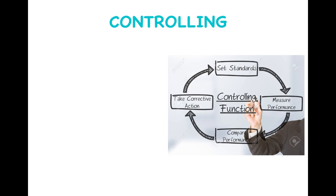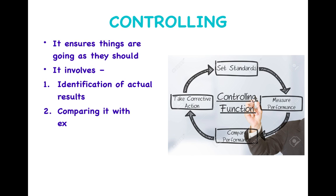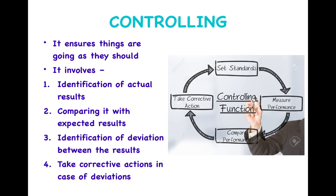The next function is controlling. Controlling is a circular process which involves setting up of standards, measuring performances, comparing performances, and taking corrective action, then again setting standards. Basically, controlling ensures that things are going as they should according to the plan. It involves identification of actual results — what results were achieved by the organization — and then comparing them with the expected results set during the planning process. If there is any deviation between actual and expected results, we identify that and take corrective actions accordingly.